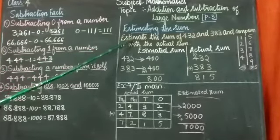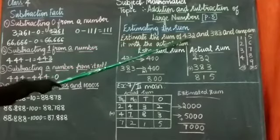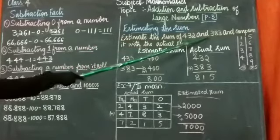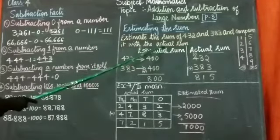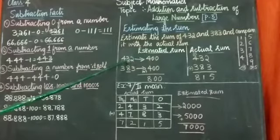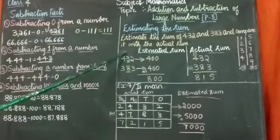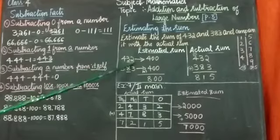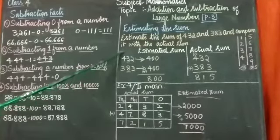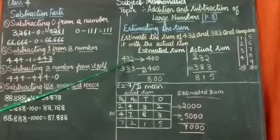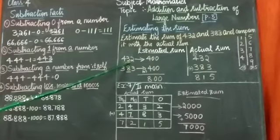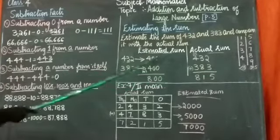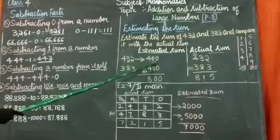They have said you estimate the sum of 432 and 383 and compare it with actual sum. Here 432. We should round off this to hundreds place. I am considering this tens place. Here it is 432. 3 is there. That is lesser than 5. I will estimate to 400.